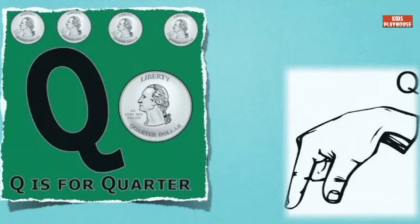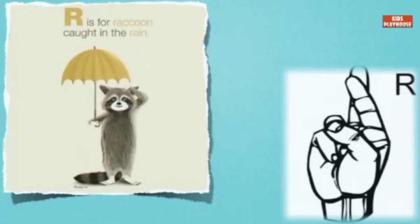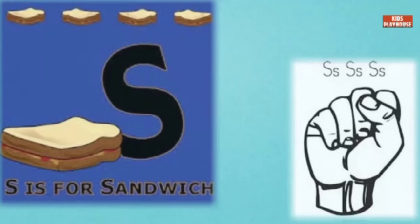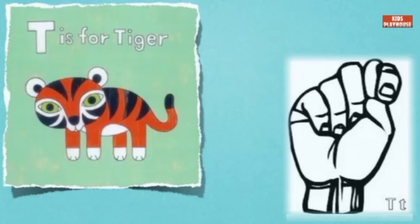Q is for Quarter. R is for Raccoon. S is for Sandwich. T is for Tiger.